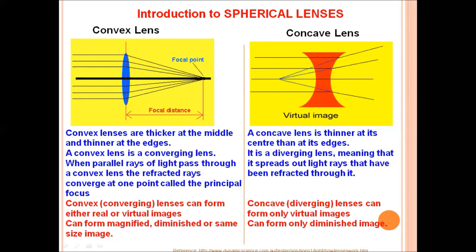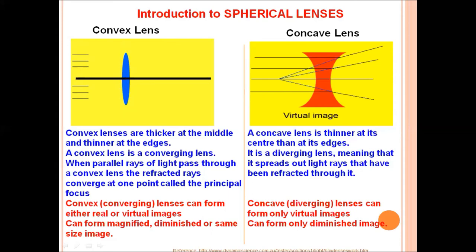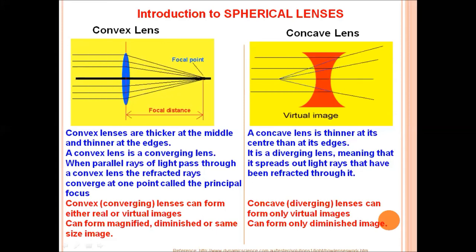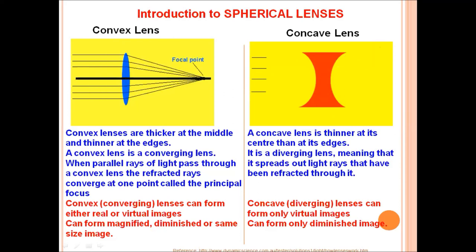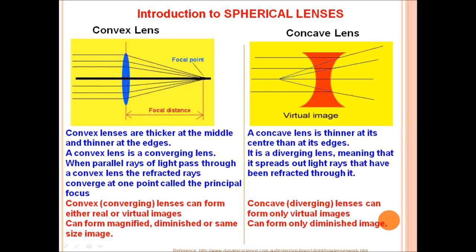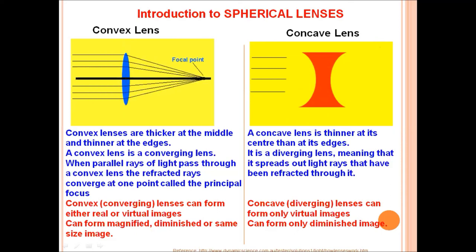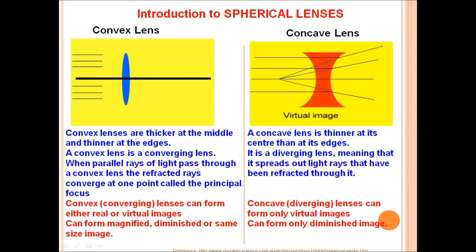Next we have spherical lenses, which are of two types: convex lens and concave lens. Convex lenses are thicker at the middle and thinner at the edges. A convex lens is a converging lens — when parallel rays of light pass through it, the refracted rays converge at one point called the principal focus. Convex lenses can form either real or virtual images, and the image can be magnified, diminished, or of the same size. A concave lens is thinner at its center than at its edges and is a diverging lens, spreading out light rays. A concave lens can only form virtual and diminished images.